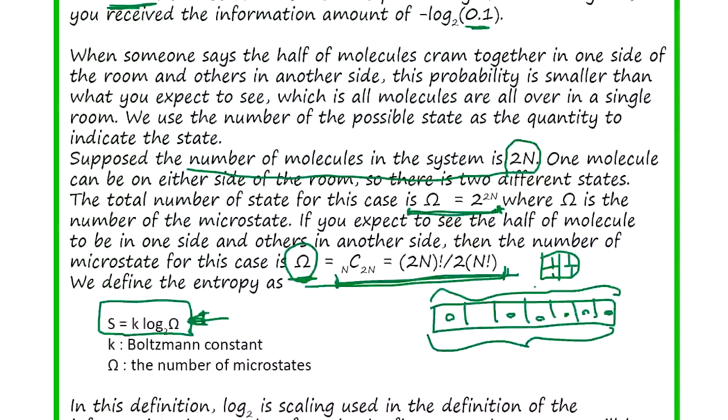So this omega is the number of microstates. Number of microstates: after you divide the room into many many small chambers, you know all possible placements of gas molecules. That's the microstate. And log2 times Boltzmann's constant, he defined this.